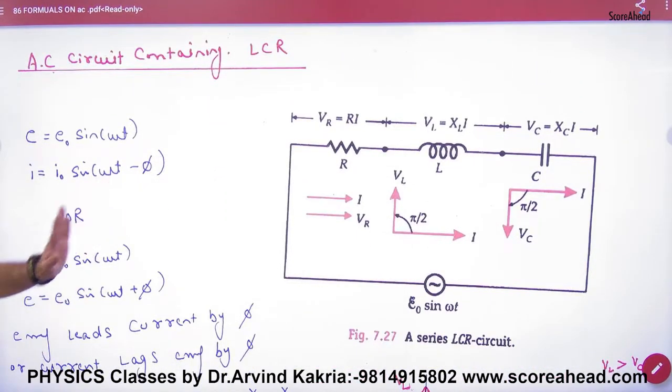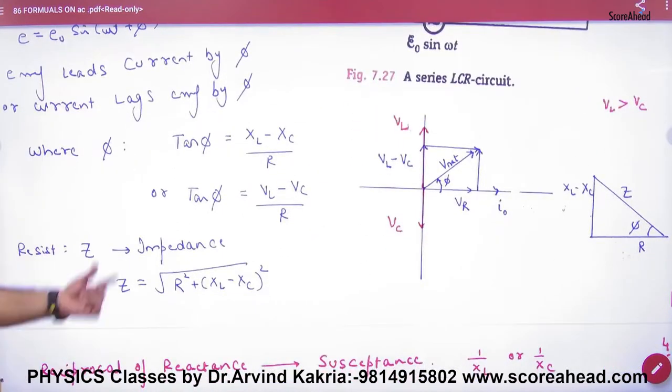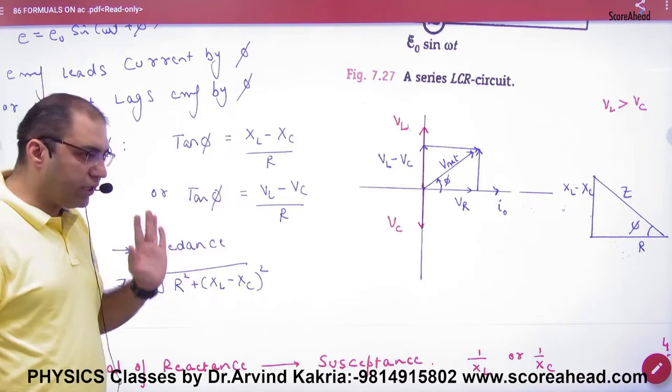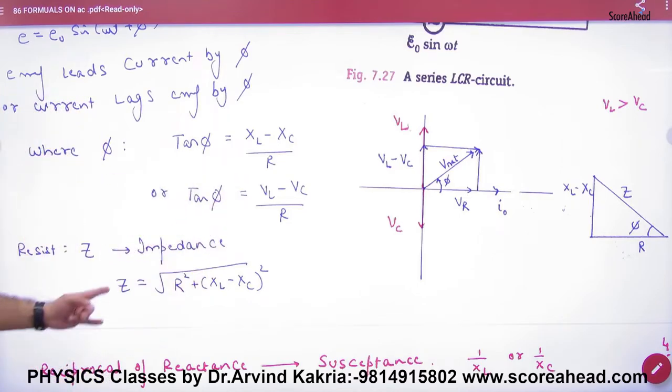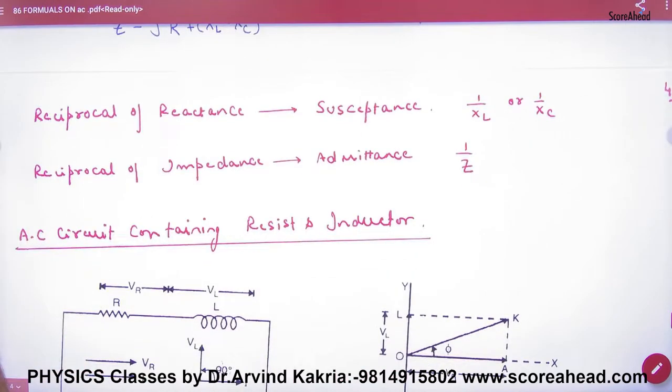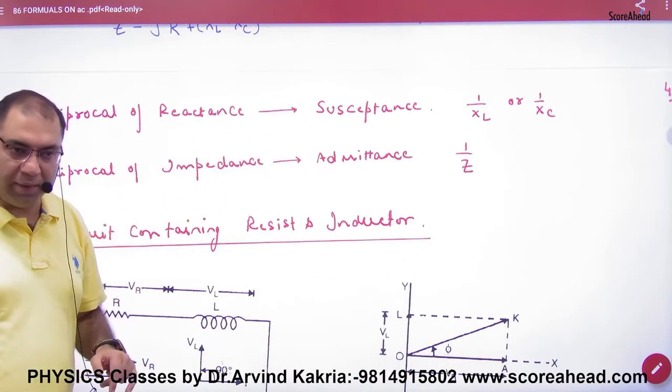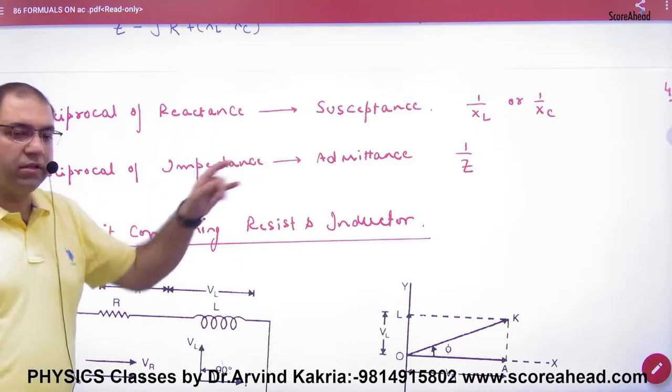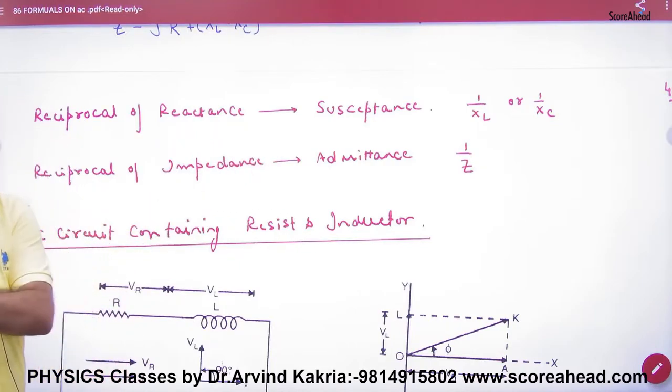Then what did we do? LCR. We discussed it in LCR. We learned to make the equation. In LCR, we learned tan phi. Look at tan phi, the net voltage, the impedance triangle, and the impedance. Then what did we do? Reciprocal of reactance is known as susceptance, and of impedance is admittance.